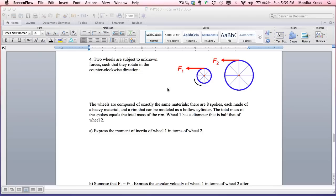Wheel number two has twice the radius of wheel number one. The wheels are composed of exactly the same materials. There's eight spokes, each made of heavy material so you can't neglect the mass of the spokes. There's also a rim that can be modeled as a hollow cylinder. The total mass of the spokes equals the total mass of the rim. Wheel number one has a diameter that is half that of wheel number two.